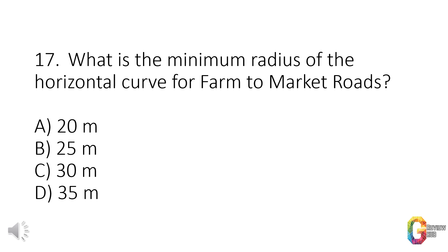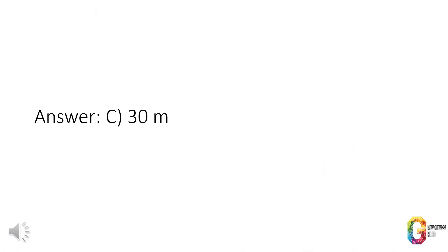Question 17. What is the minimum radius of the horizontal curve for farm-to-market roads? a. 20 m. b. 25 m. c. 30 m. d. 35 m. Answer: c. 30 m.